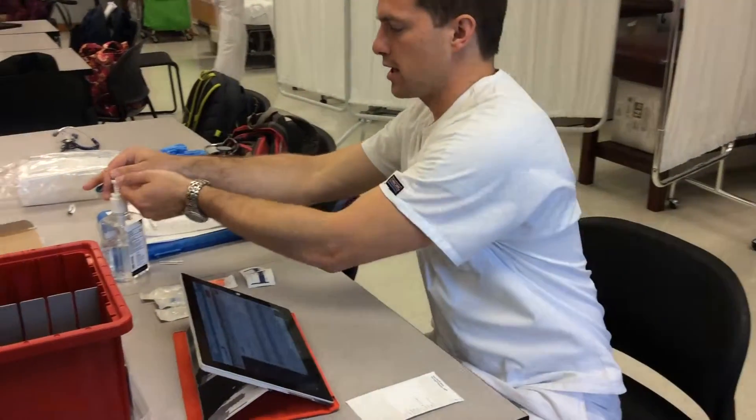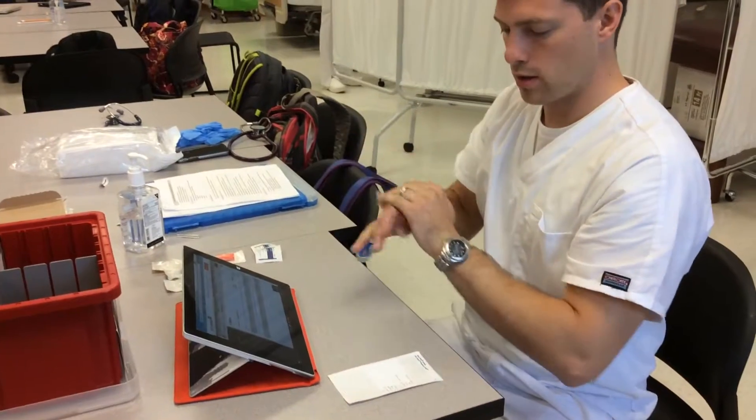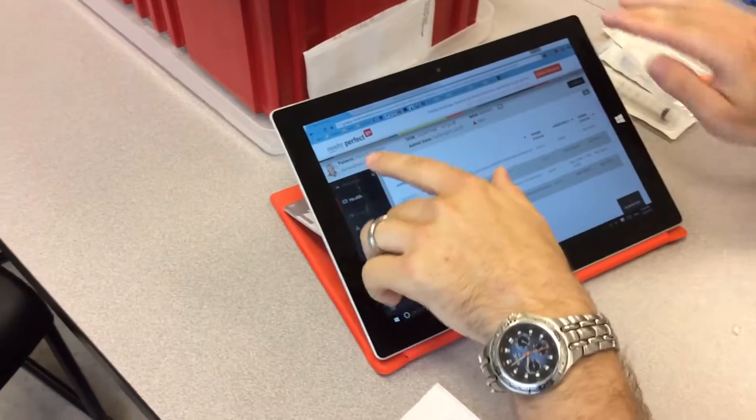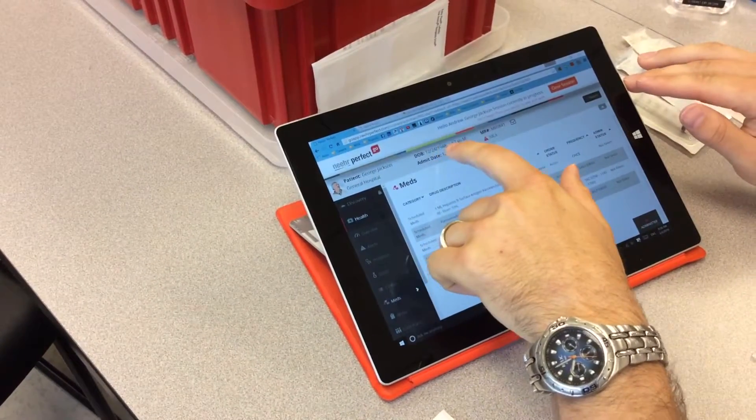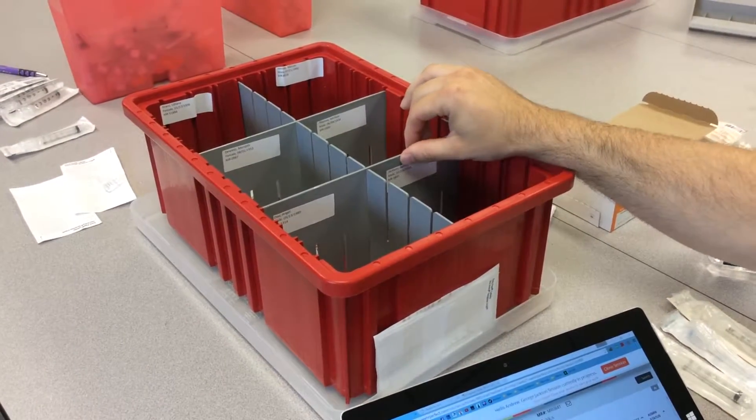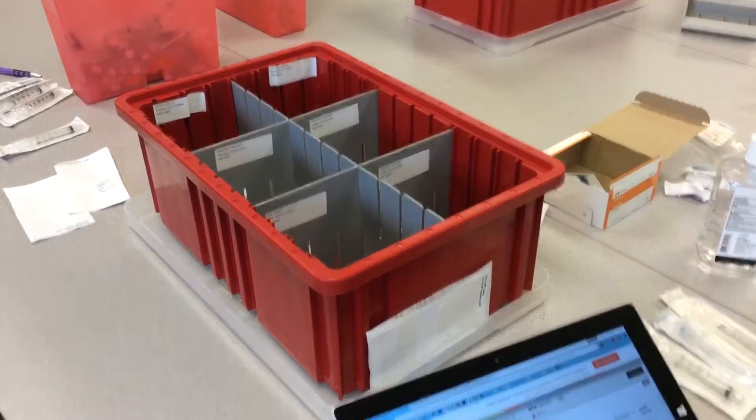So the first thing I'm going to do is hand hygiene. And I'm going to compare what I've got on the MAR here - George Jackson, 12-24-48, and his medical record number - with what I have in the medicine drawer. George Jackson, 12-24-48, and the right medical record number.